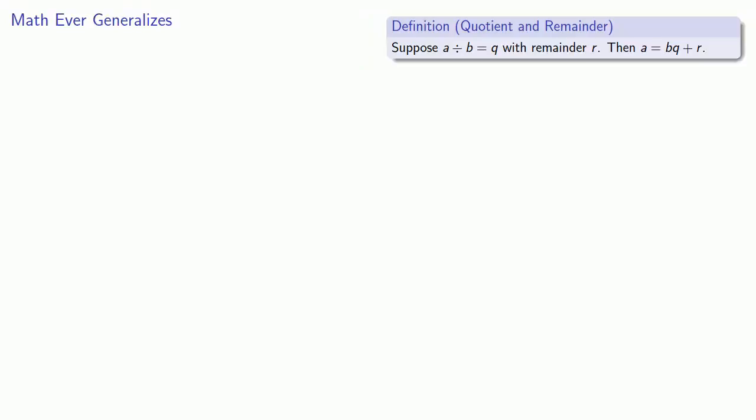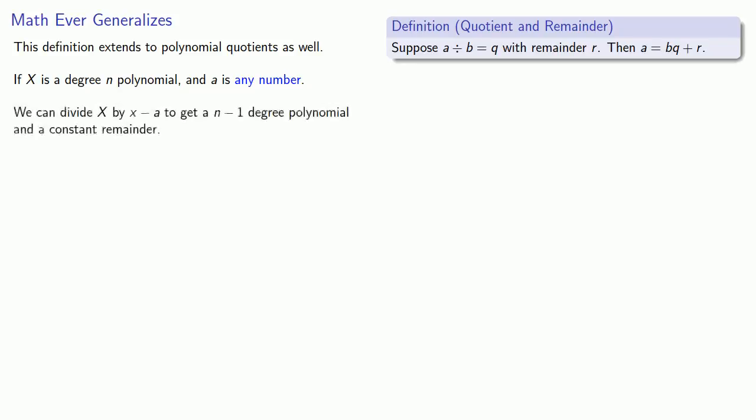Well, math ever generalizes. This definition, which we used initially with whole numbers, extends to polynomial quotients as well. And this is useful in the following way. If capital X is a degree n polynomial and a is any number, we can divide capital X by x minus a to get an n minus 1 degree polynomial and a constant remainder. We can then rewrite our original polynomial, capital X, as a sum and product.